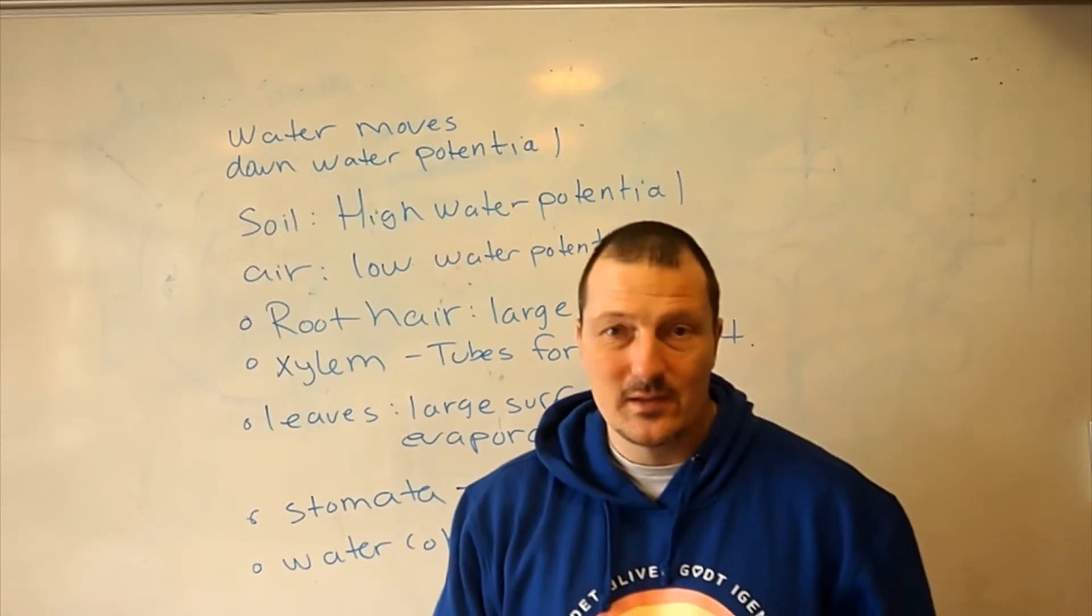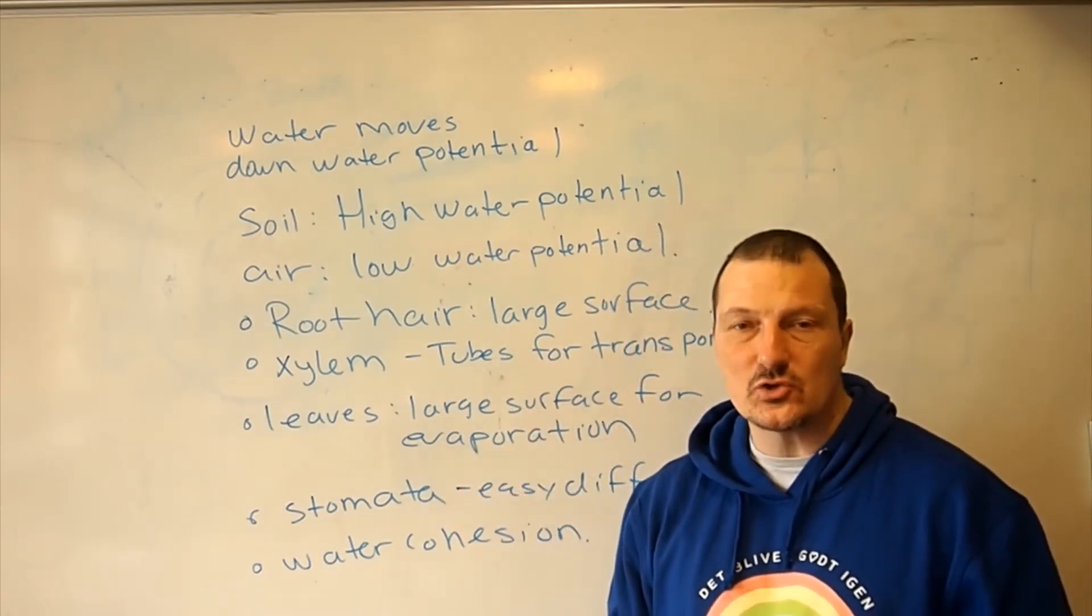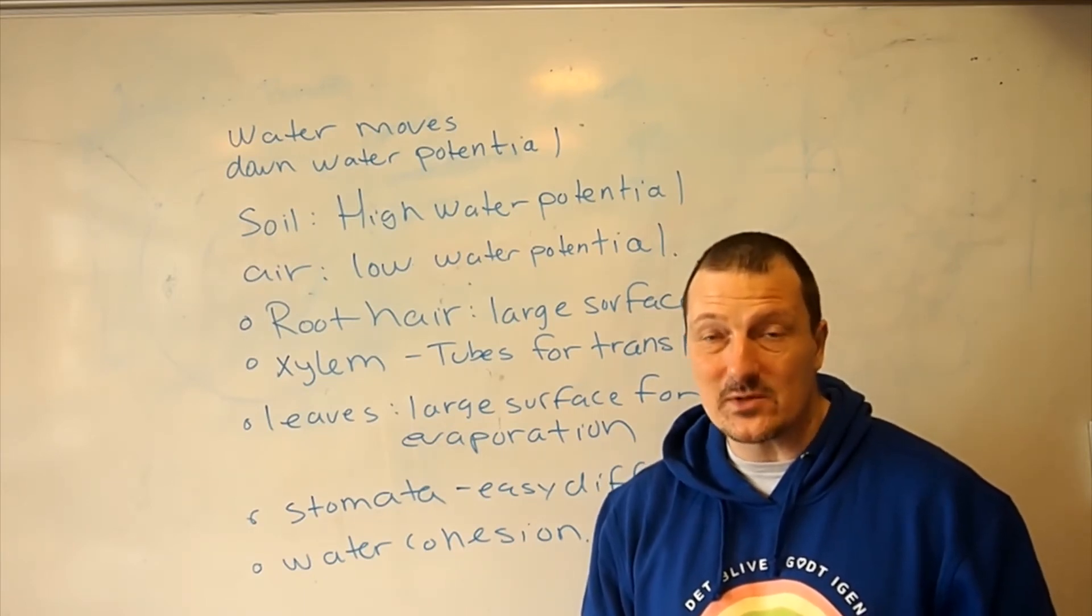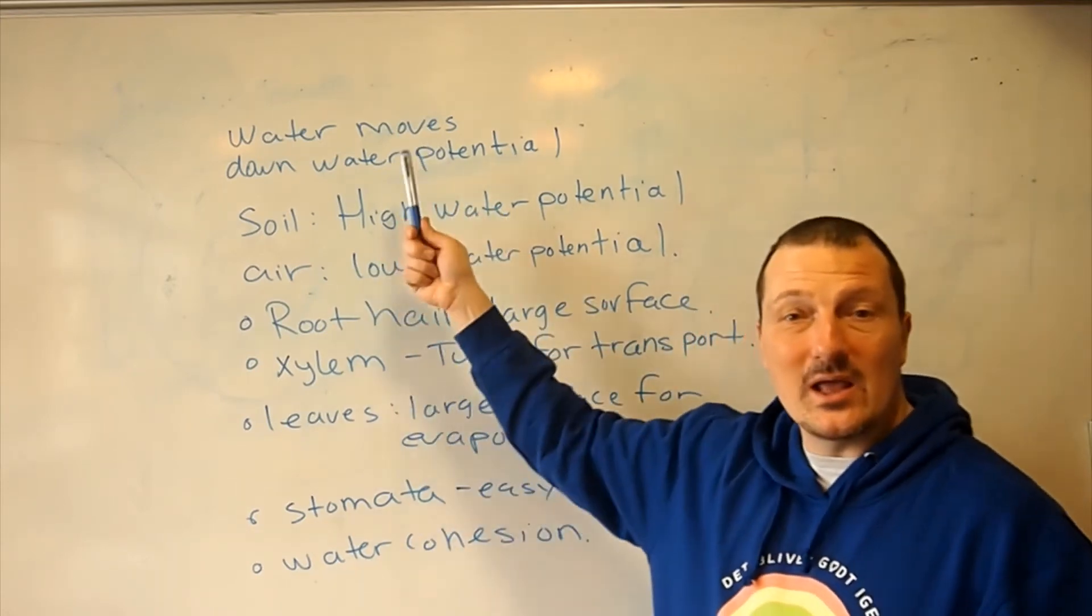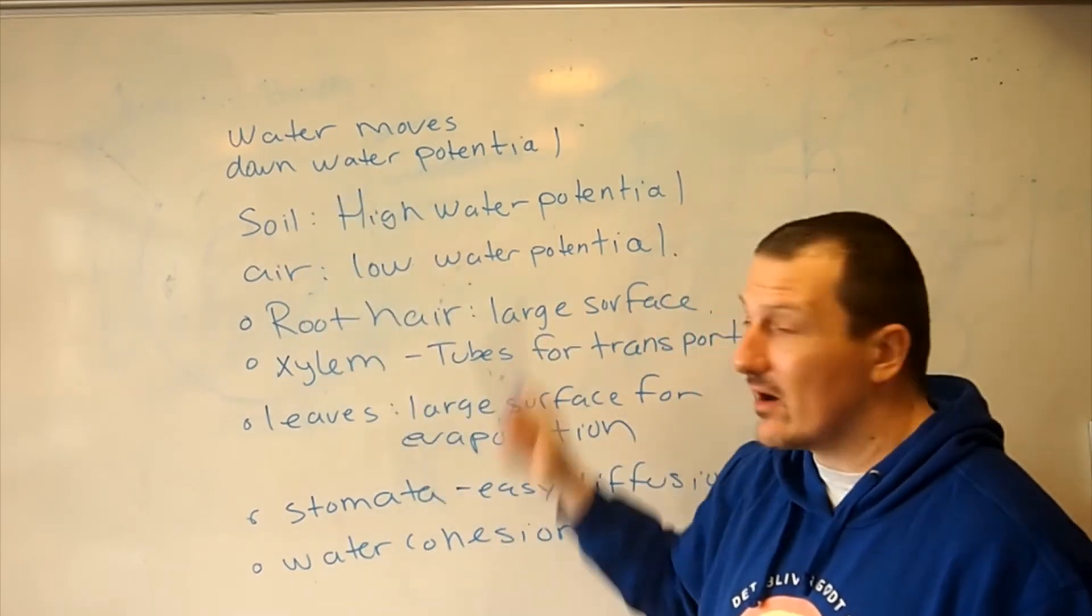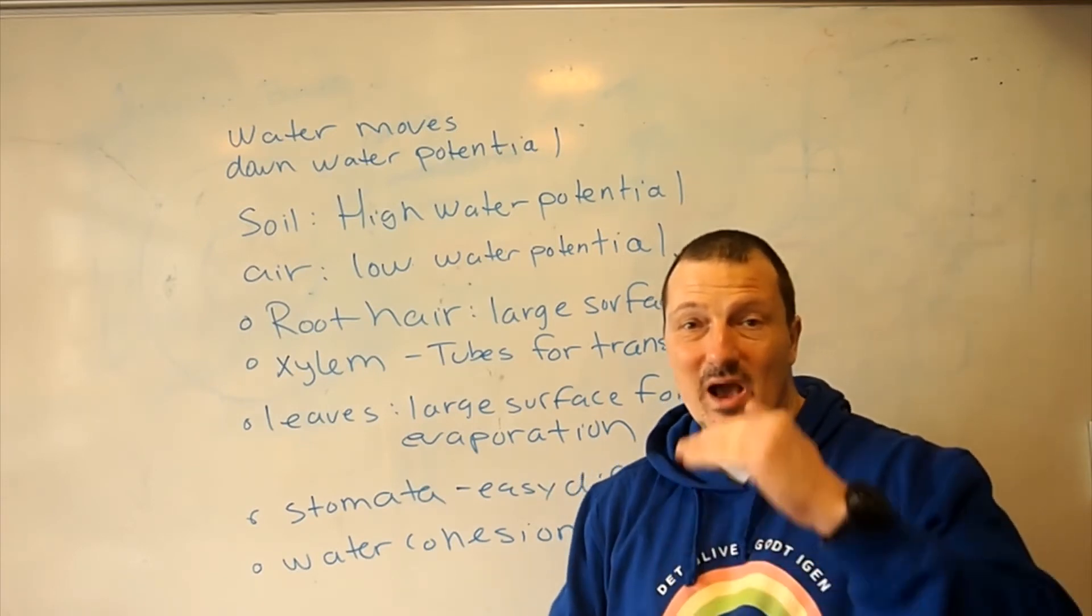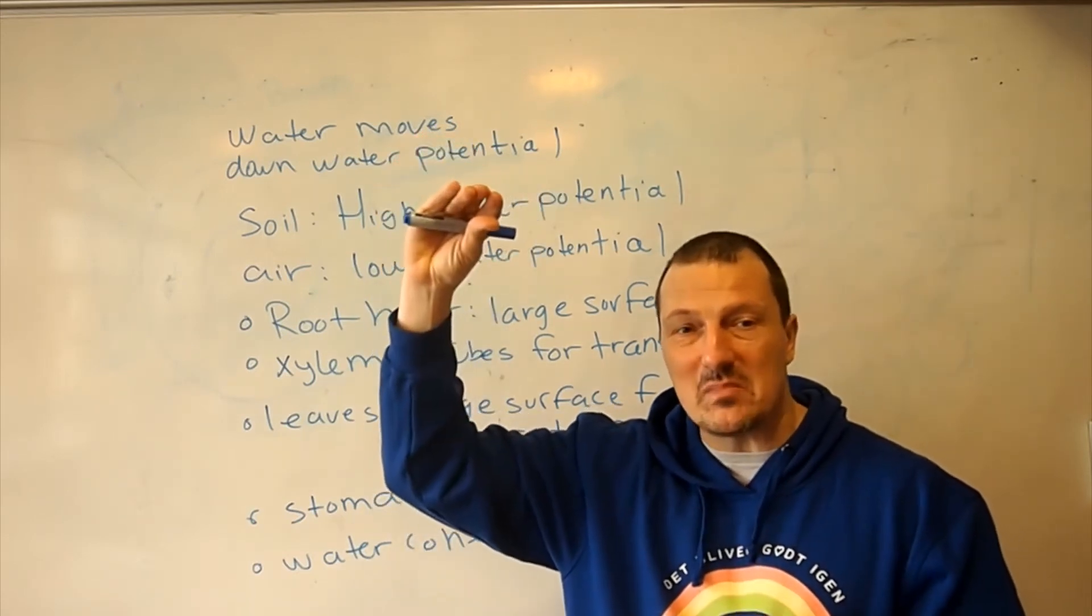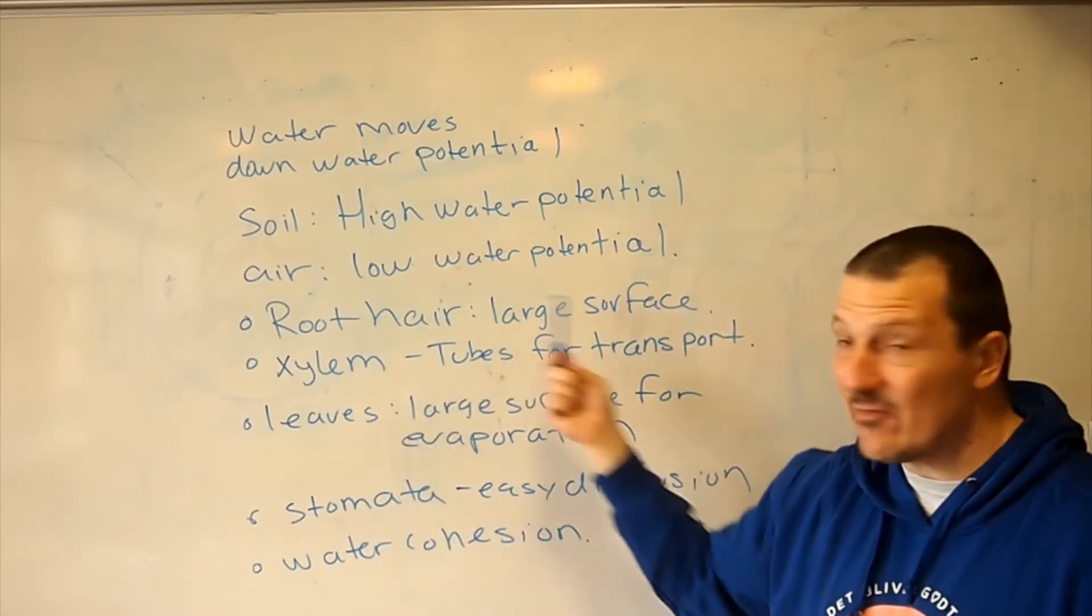If we look at the structure of plants, it is actually built to make sure that you've got a good water transport. Now, if you remember from chapter three, in general water moves down the water potential. So in the soil we have a high water potential, and in the air above the leaves we have a low water potential. But just because we have a high water potential in the soil and a low water potential in the air, it doesn't mean that the plants work. They still need some structures.